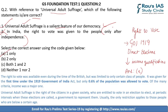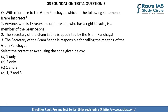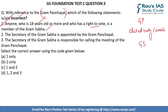Question 3 contains three statements and we need to identify which among them are incorrect with reference to Gram Panchayat. The first statement reads that anyone who is 18 years old or more and has a right to vote is a member of Gram Sabha. This is correct. Gram Panchayat is an elected body and is small, while Gram Sabha includes all village members who are 18 and above with the right to vote. Hence statement 1 is correct.